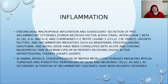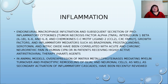Inflammation involves endoneurial macrophage infiltration and subsequent secretion of pro-inflammatory cytokines including tumor necrosis factor alpha, interleukin-1-beta, interleukin-6, interleukin-8, and chemokines such as CCL2 and CXC family. Growth factors and inflammatory mediators such as bradykinin, prostaglandin, serotonin, and nitric oxide have been correlated with acute and chronic neuropathic pain in human CIPN or in patients receiving highly active antiretroviral therapy agents.